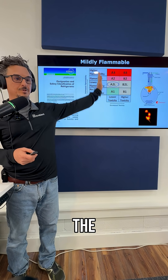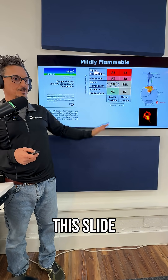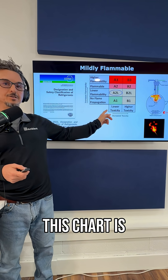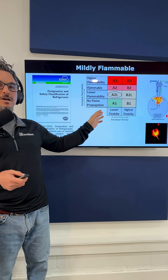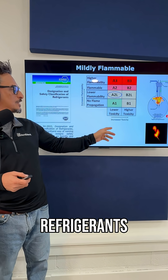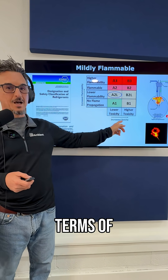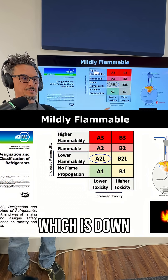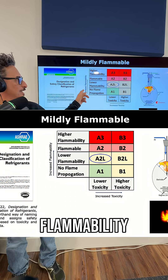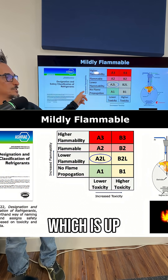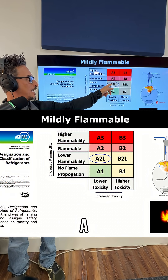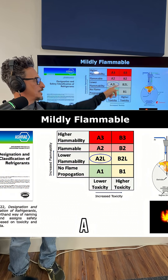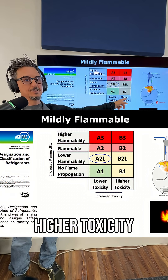Moving on to the middle part of this slide, this chart is directly from ASHRAE 34. It classifies refrigerants in terms of toxicity, which is down here, and flammability, which is up here. Lower toxicity is designated A, and higher toxicity is designated B.